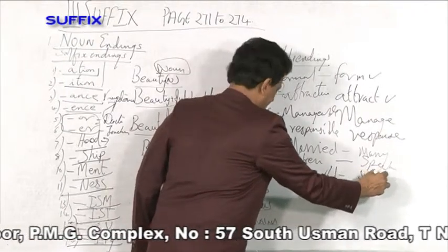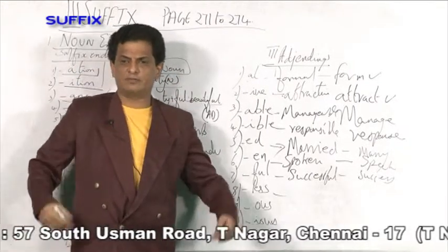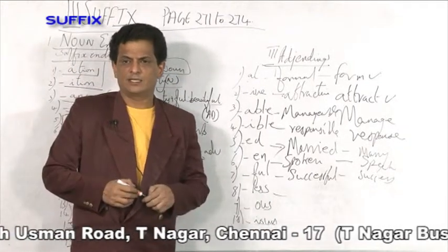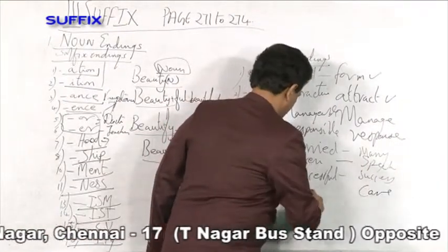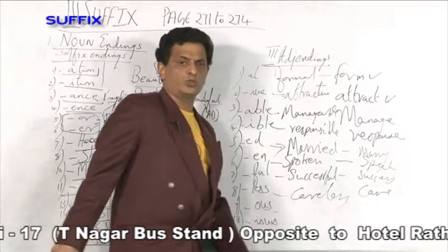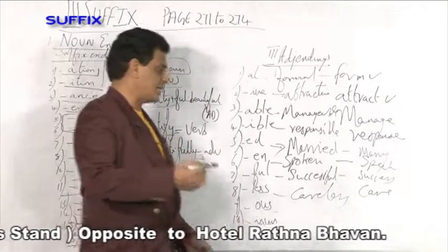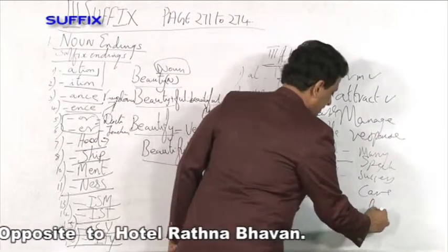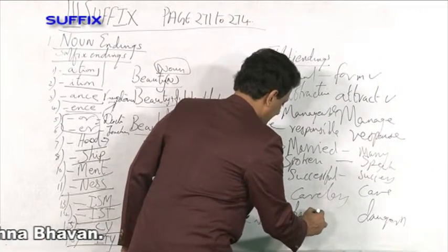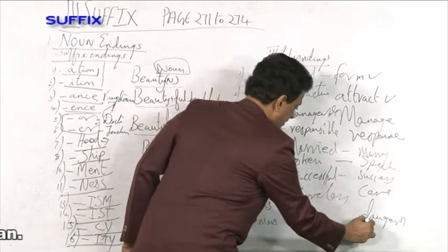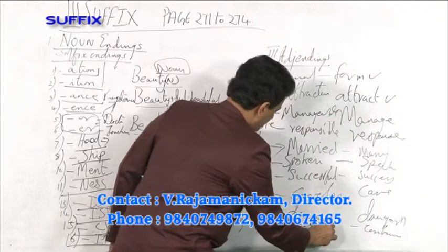'Successful' comes from the word 'success.' Any word ending with '-less' is an adjective — 'helpless', 'careless', which comes from the word 'care.' Any word ending with '-ous' is an adjective — 'dangerous', which comes from the noun 'danger'; 'continuous', which comes from 'continue' — so 'continuous' becomes an adjective.